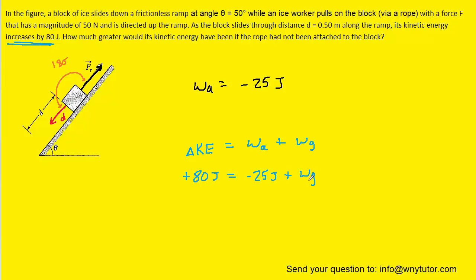So, what we'll do is actually solve for the work done by gravity, and that's going to be relatively straightforward. We just add the 25 over to the other side, so we have 105 joules is equal to the work done by gravity.